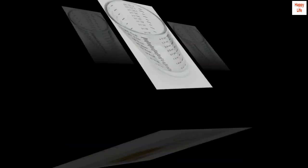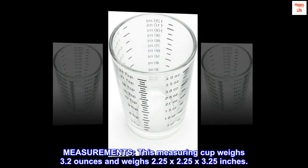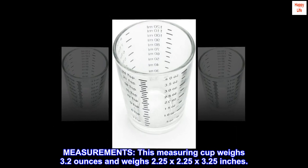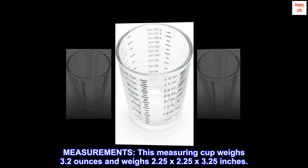Measurements: this measuring cup weighs 3.2 ounces and measures 2.25 by 2.25 by 3.25 inches. Our mini measuring glass precisely measures liquid ingredients for balanced recipes and delicious beverages.